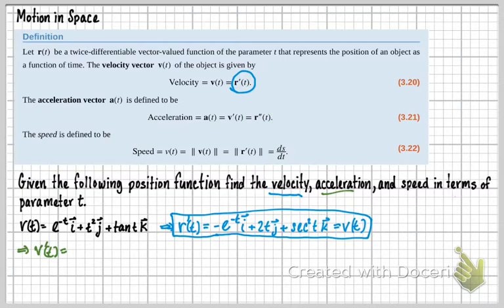So in finding that acceleration, I just take that derivative. So derivative of negative e to the negative t is going to be e to the negative t, because the derivative of e to the t is e to the t. And then this is a composition, or a chain rule here.